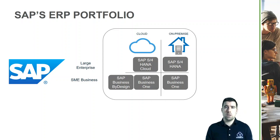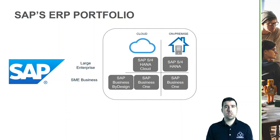As you can see on the slide behind me, SAP Business by Design is a cloud solution, while Business One can be on-premise or in the cloud.